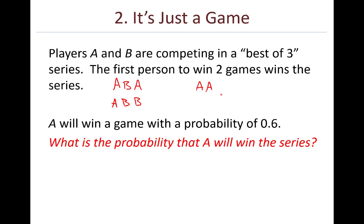Now this series doesn't always have to go all three games. It could be that A wins twice in a row right away, in which case A wins the series and the series is over. So here's the question. Let's say that A will win a game with probability of 0.6, so a little bit better than half. A is a little bit of a better player than B. What is the probability that A is going to win the whole series? Pause the video, think about this for a couple minutes, and then start up again when you're ready.